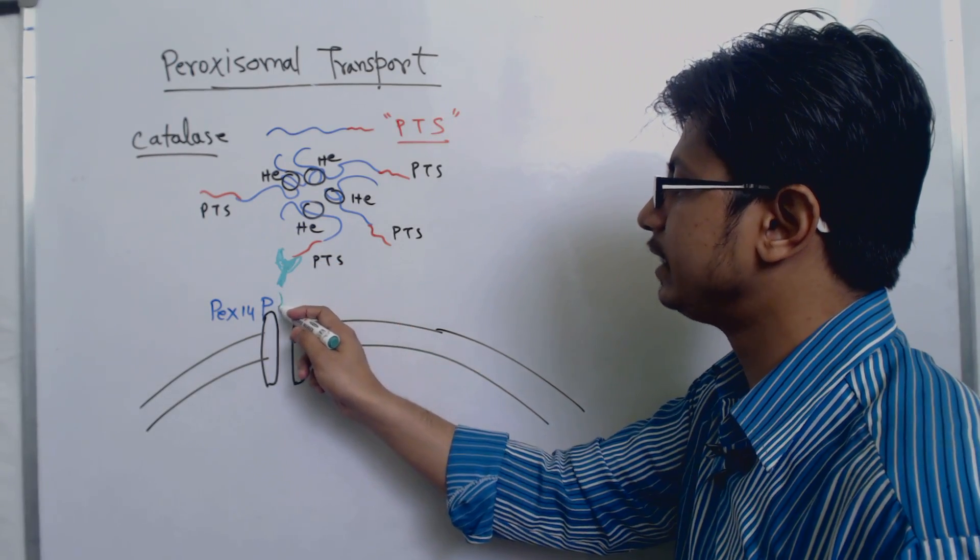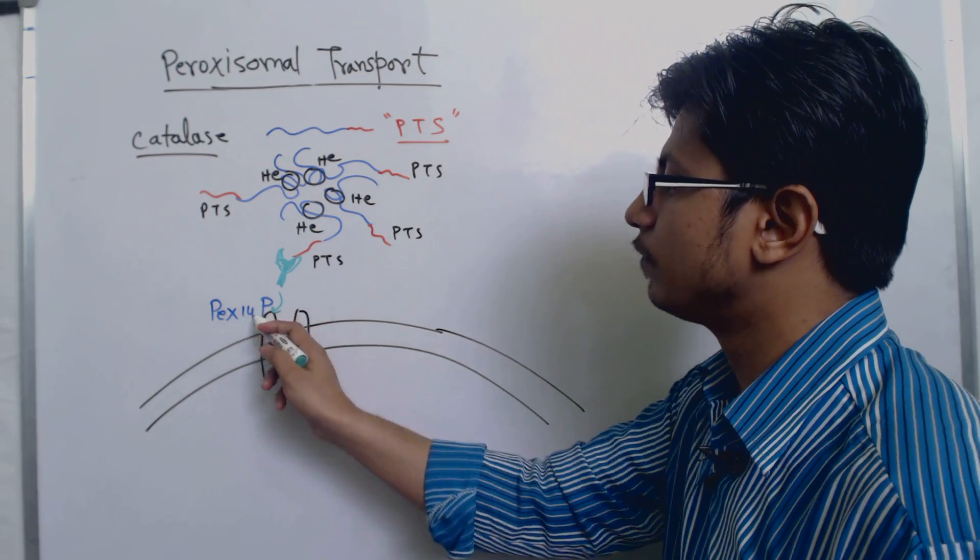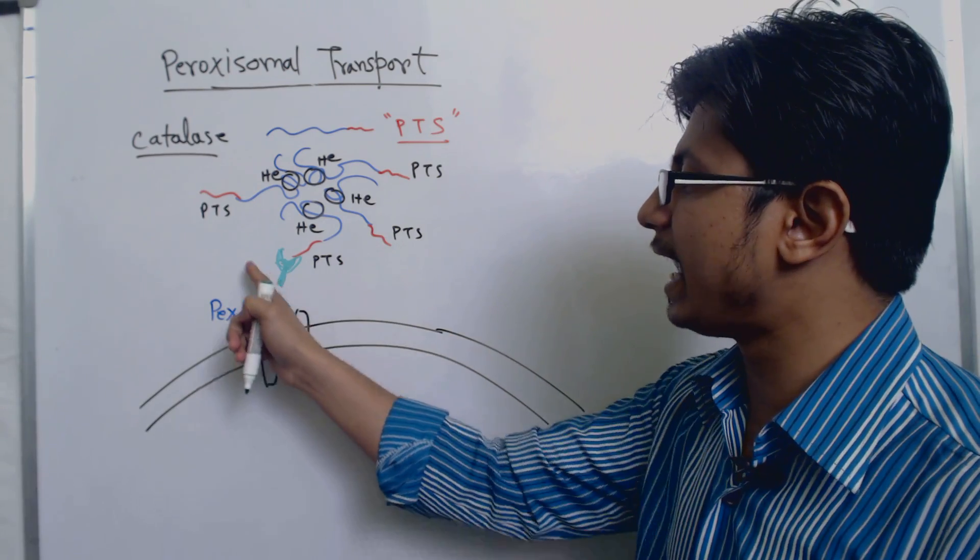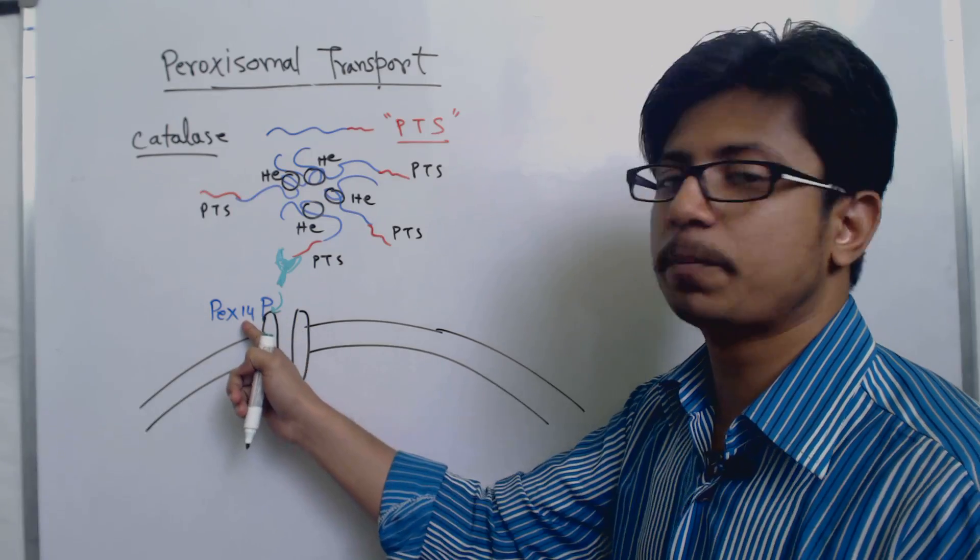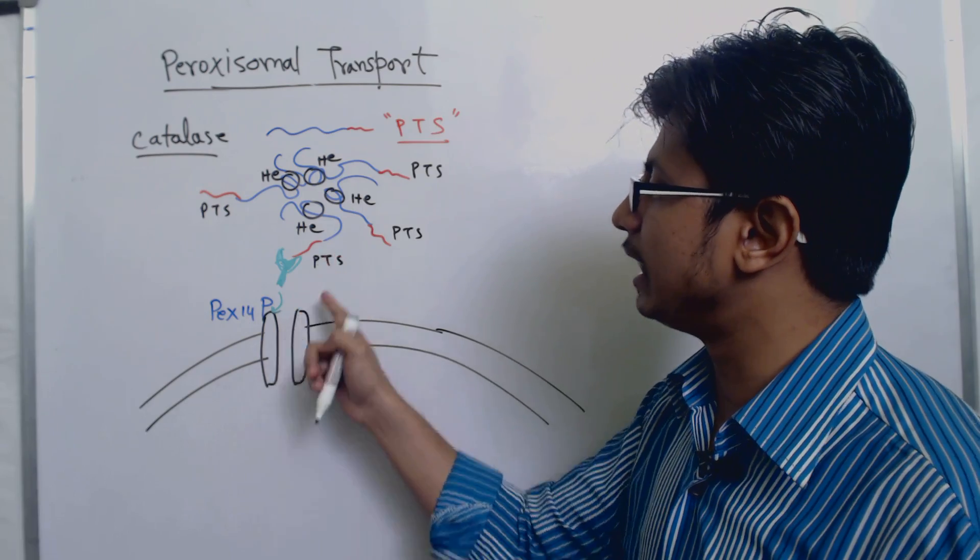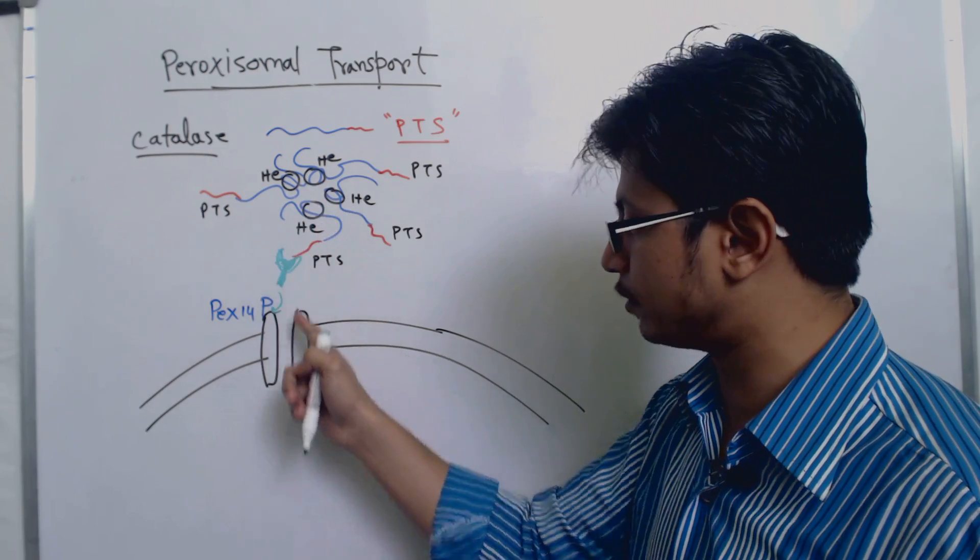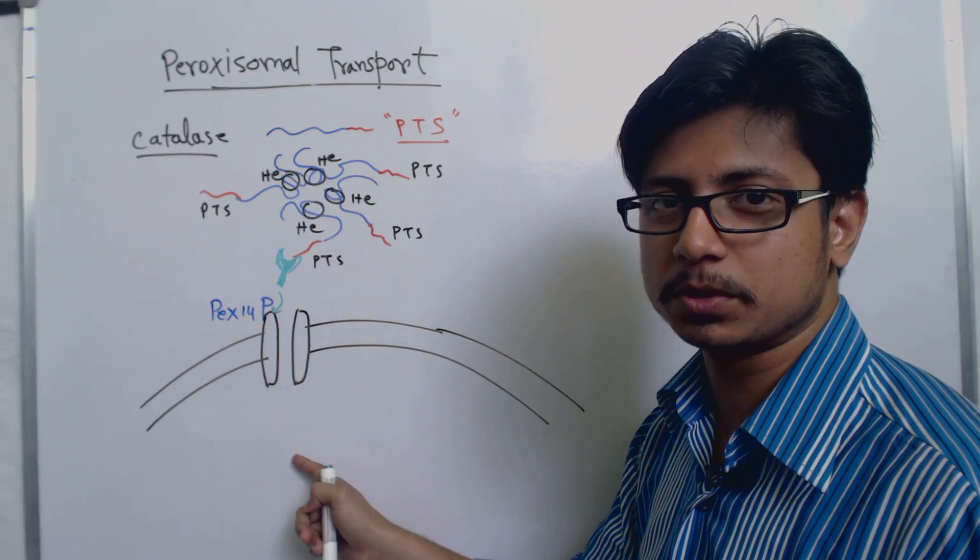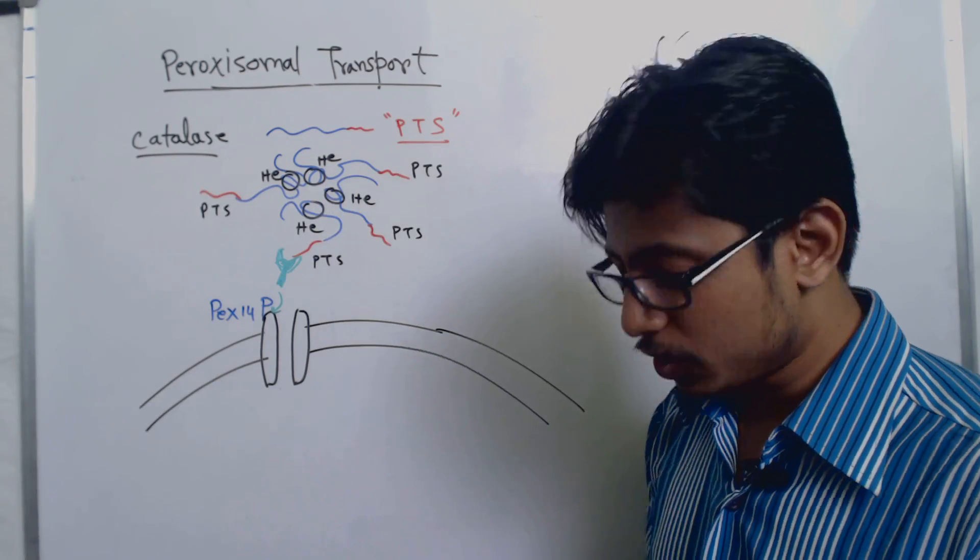PEX14P acts as a PTS response element or PTS binding element as a translocon. That will allow this polypeptide to be pulled inside the peroxisome.